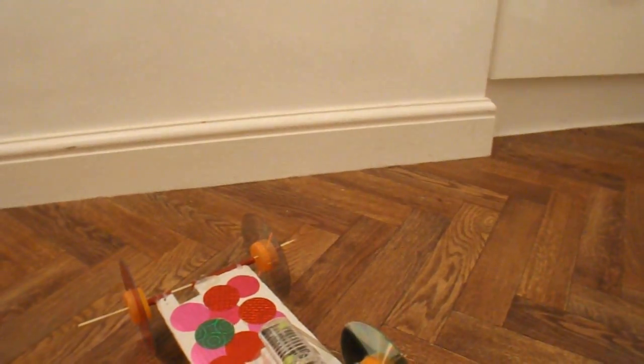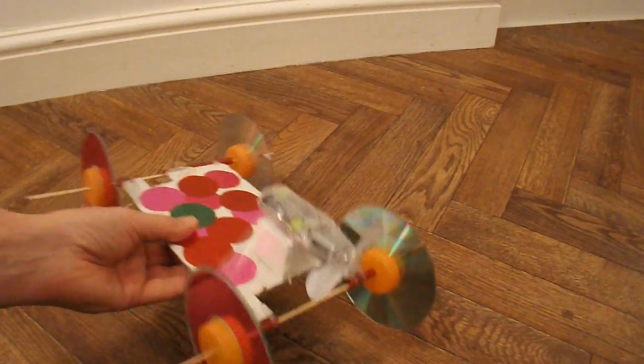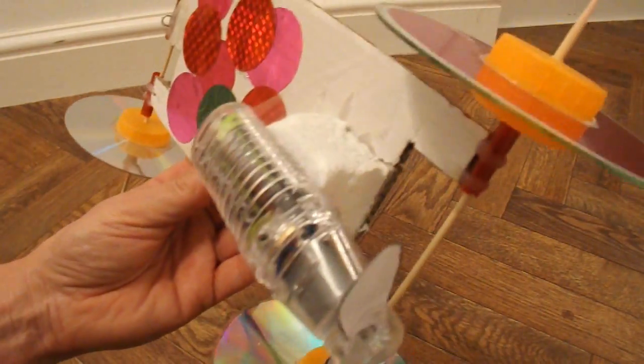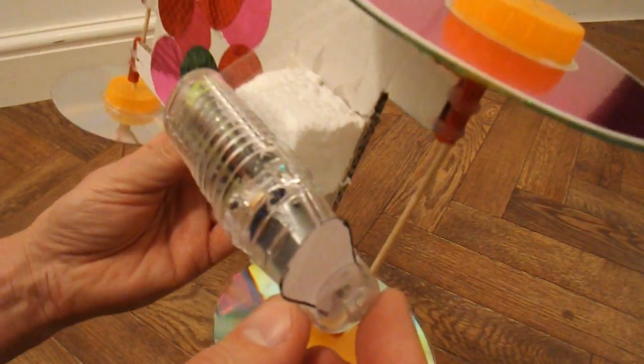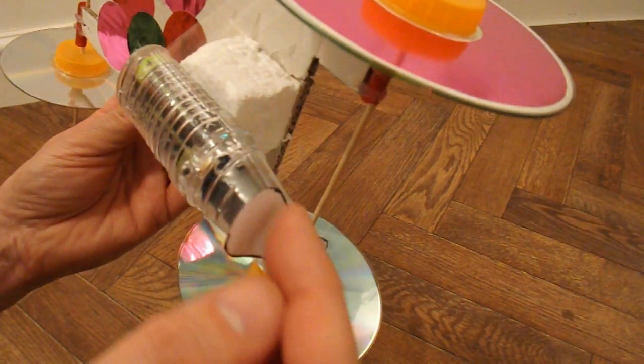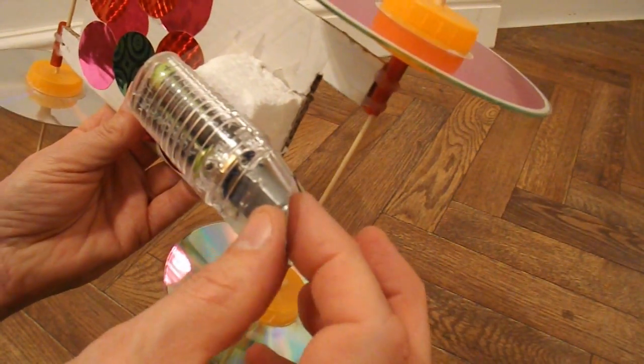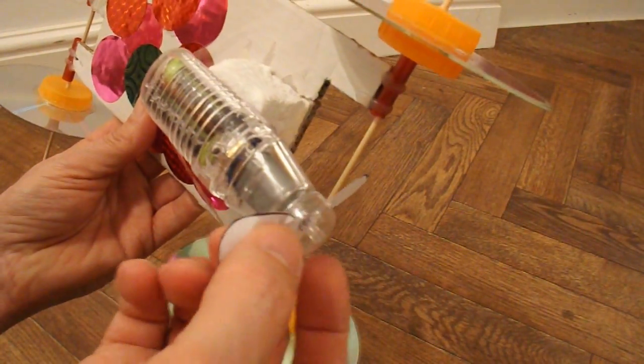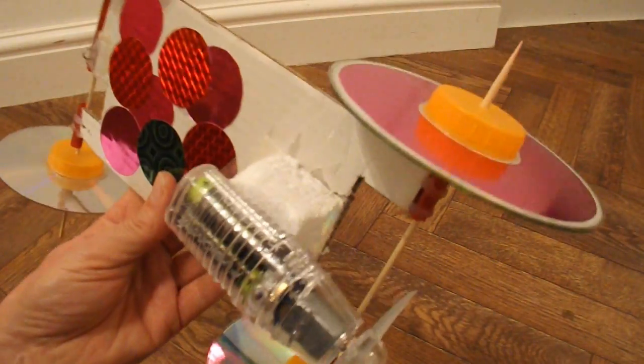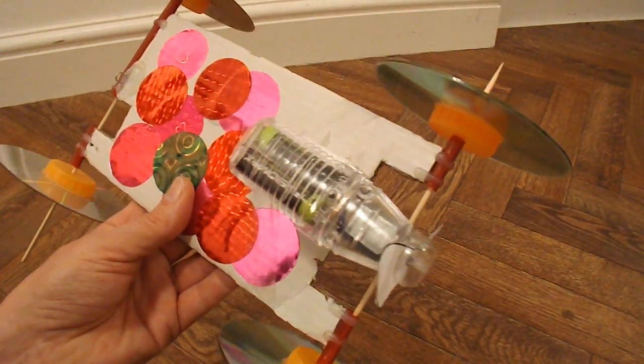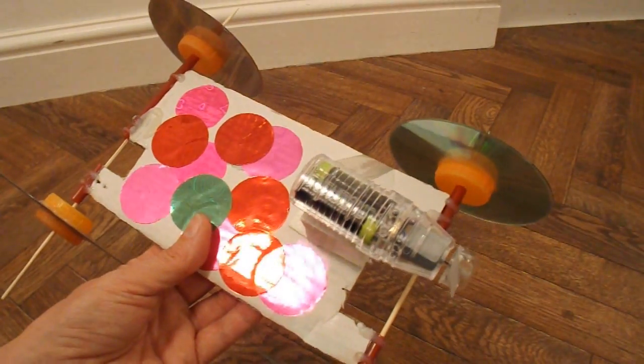So if we just set that down again. This little plastic nose, as I say, has the shape in it to twist the propeller. And that works absolutely fine, as you can see.